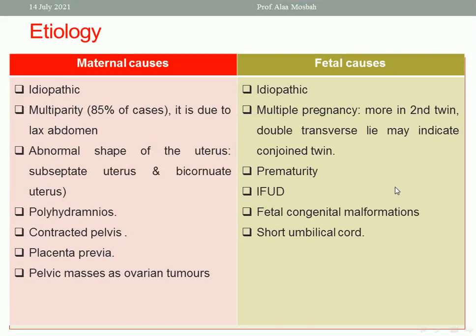What is the etiology of shoulder presentation? Maternal causes: it may be idiopathic. It may be due to multiparity in 85% of cases — this is the major cause, due to laxity of the abdominal wall muscles. Other causes include abnormal shape of the uterus like bicornuate or subseptate uterus, fetal remnants, contracted pelvis, placenta praevia, pelvic masses, and ovarian tumors.